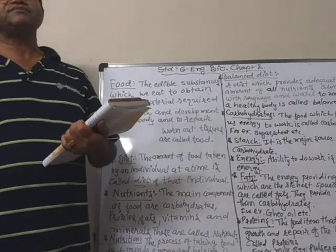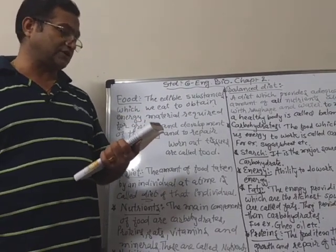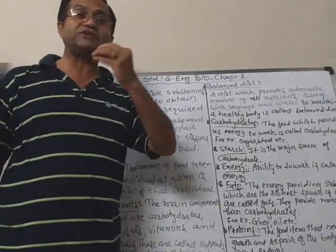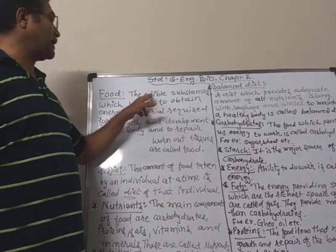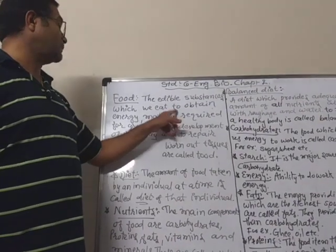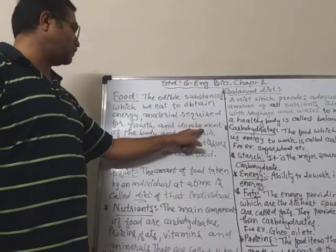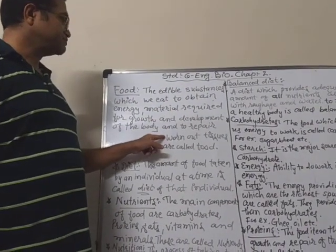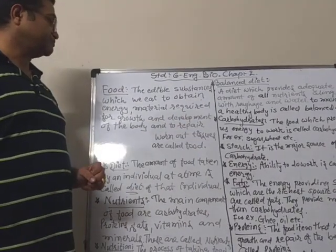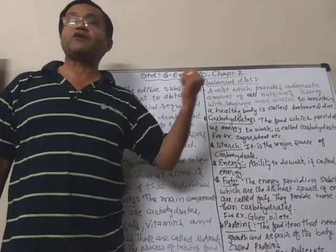So here we say: what is food actually? Food is the edible substance — edible means that we can eat. Food are the edible substances which we eat to obtain energy, material required for growth and development of the body, and also to repair worn out tissues. This is called food.